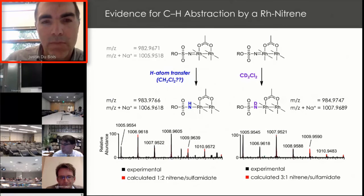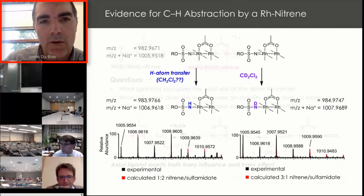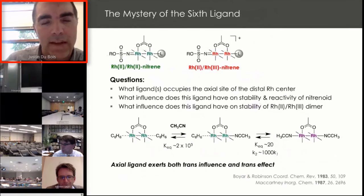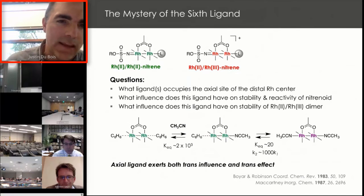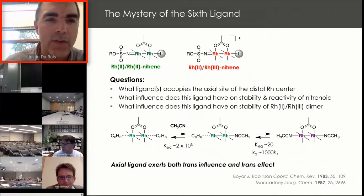What DESI mass spec has done for us is to confirm many of our suspicions by being able to capture molecular ions reflective of the different intermediates. One of the most intriguing finds was that of the rhodium dimer that has attached to it the anionic form of the sulfamate ligand. What we were able to do using this DESI mass spec method was to simply switch from methylene chloride to deuterated methylene chloride and show that the formation of this anionic sulfamate complex was really the result of C-H abstraction of solvent.